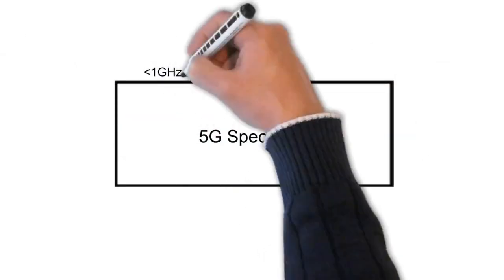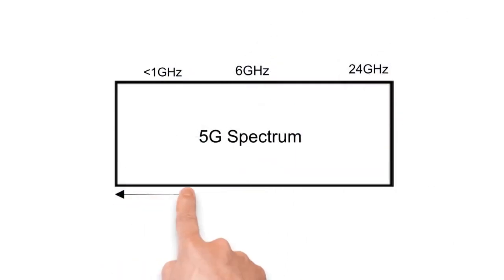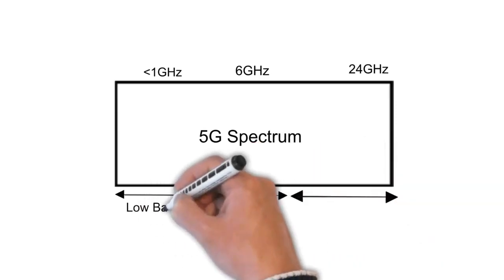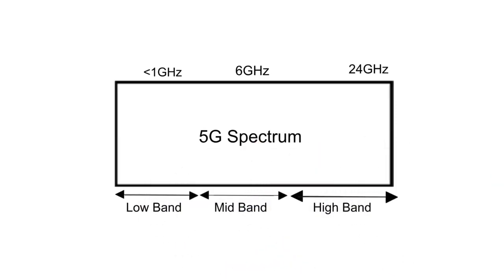There are many spectrum bands within 5G. The higher the frequency of the band, the lower the latency. The lower the latency, the shorter the distance the waves travel, meaning faster data speeds.